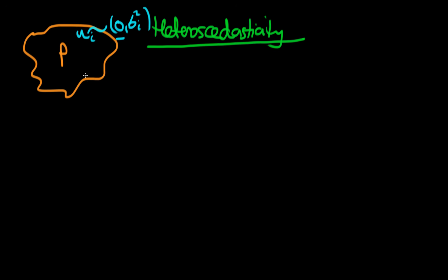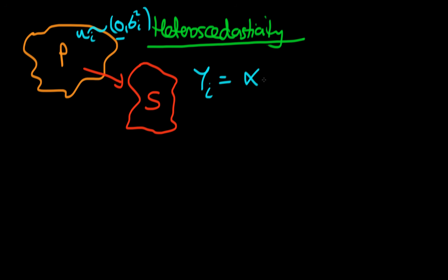We don't actually observe this population error U. We have to come up with some sort of estimate of these errors, and we do that by taking a sample from the population, because generally we don't deal with the entirety of the population data, and then by estimating some sort of econometric model on that sample. So let's say we estimate a model: Y_i = Alpha + Beta_1 * X1_i + U-hat_i, using our estimated error U-hat_i.